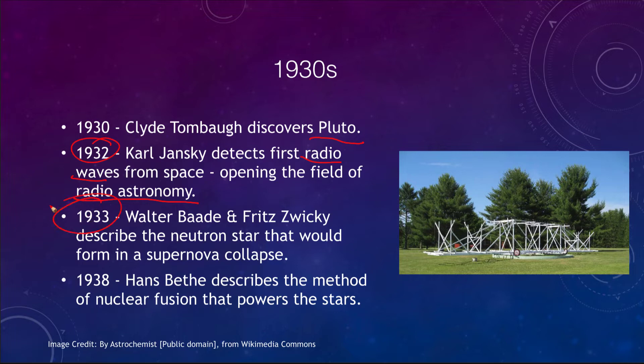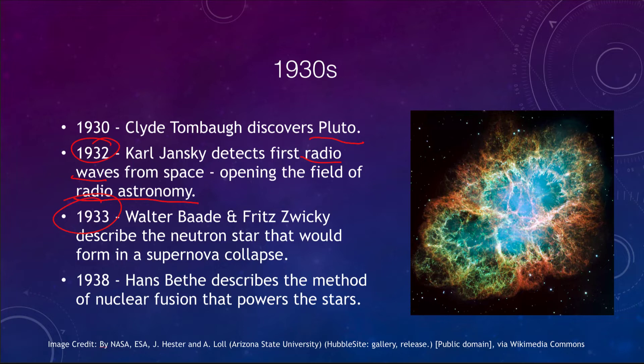A year later in 1933, neutron stars were theorized to exist. Walter Baade and Fritz Zwicky described the neutron star that would form in a supernova collapse, and that is now known to exist at the center of objects like the Crab Nebula.